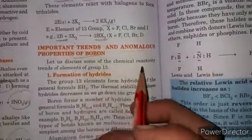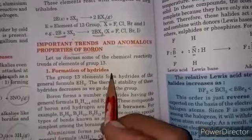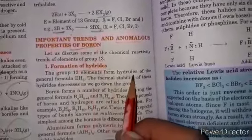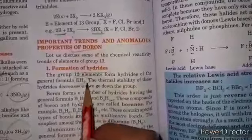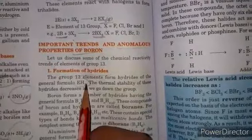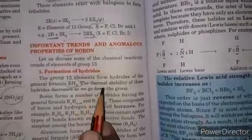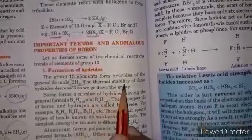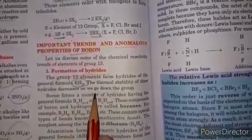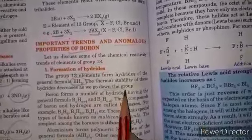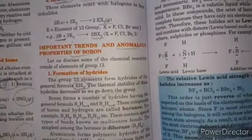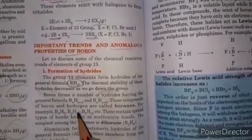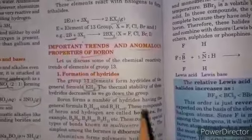Let us discuss formation of hydrides. Group 13 elements form hydrides of general formula EH3. The thermal stability of these hydrides decreases as we go down the group. Boron forms a number of hydrides.